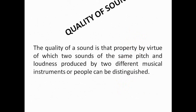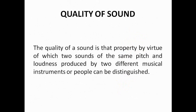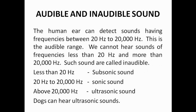The quality of a sound is that property by virtue of which two sounds of the same pitch and loudness produced by two different musical instruments or people can be distinguished. Regarding audible and inaudible sound: the human ear can detect sounds having frequencies between 20 Hz and 20,000 Hz — this is the audible range. Sounds of frequencies less than 20 Hz are called subsonic, sounds between 20 Hz and 20,000 Hz are sonic, and sounds above 20,000 Hz are ultrasonic. Dogs can hear ultrasonic sounds.